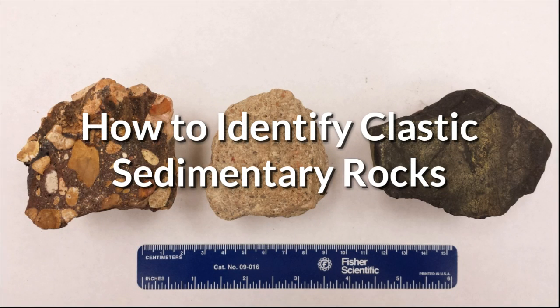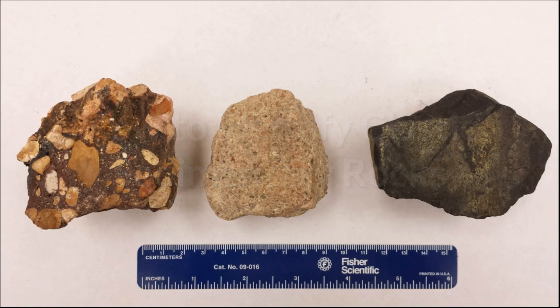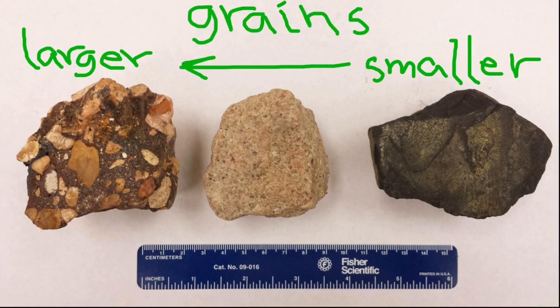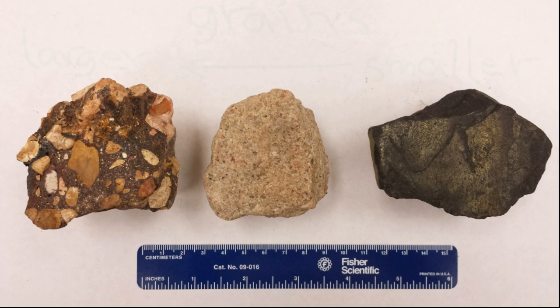The clastic sedimentary rocks are composed of weathered particles, from microscopic clay to boulders. These rocks are identified by the sizes of their grains. Because the clastic rocks are classified by grain size, we need to calibrate our eye so that we can judge the approximate size of the average particle.